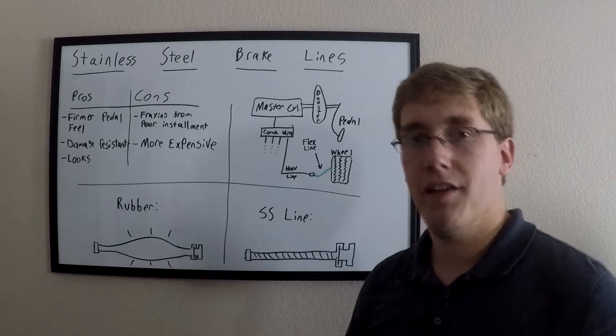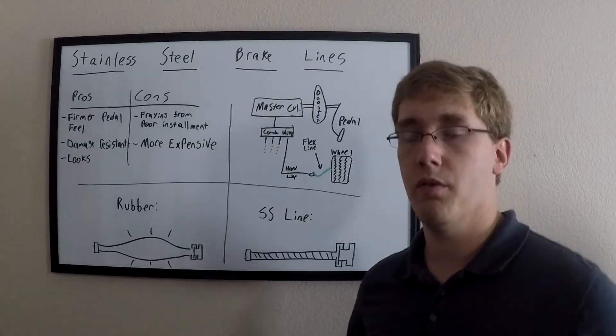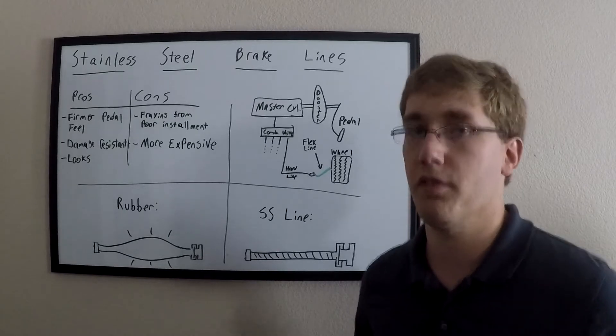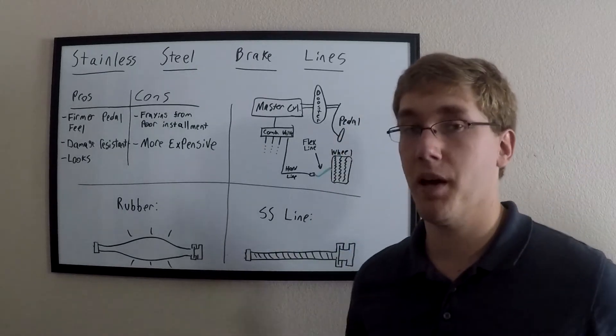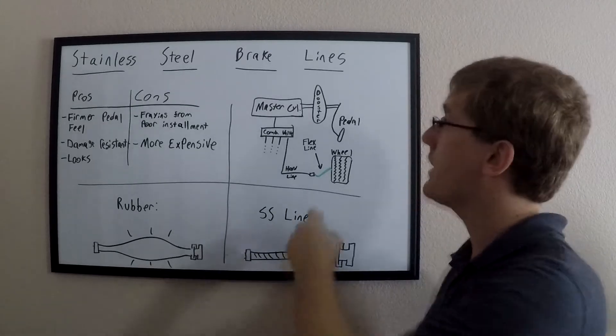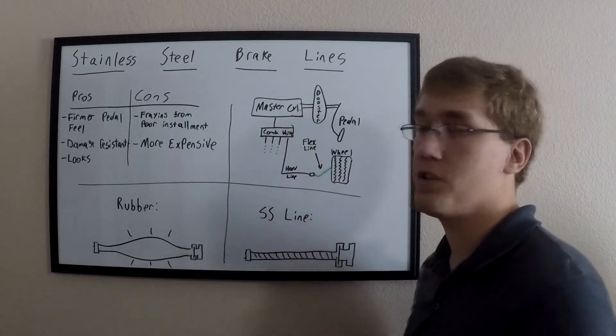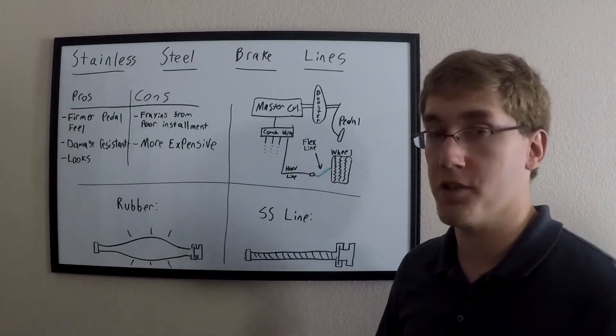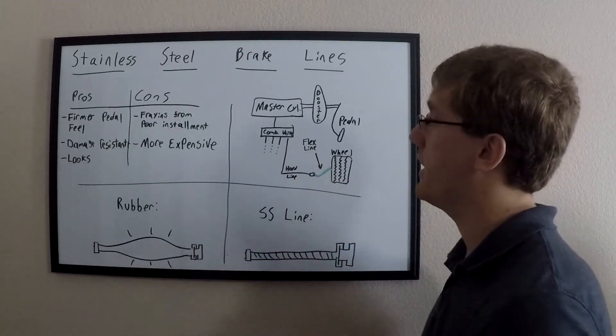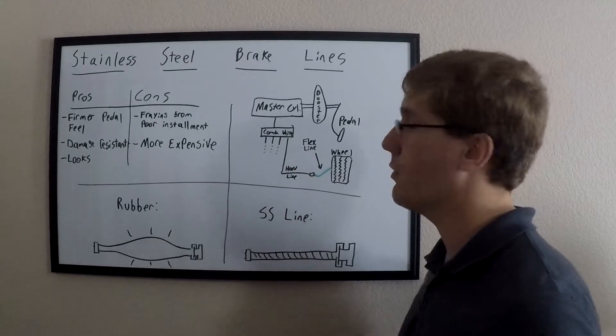So before we get into the advantages and disadvantages of stainless steel brake lines, let me first give you a general overview of how braking systems in most cars work. You have the brake pedal itself, which activates a brake booster that magnifies the pressure from your foot and activates the master cylinder, which is responsible for converting the pressure from your foot into hydraulic pressure, which is then split by a combination valve or some other mechanism which sends that hydraulic pressure to all four wheels.